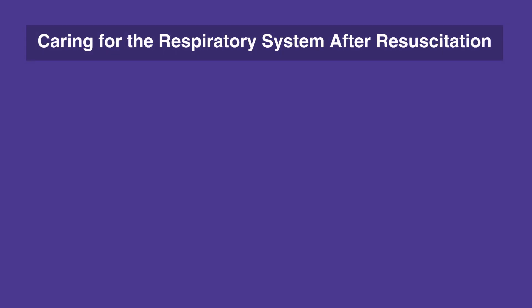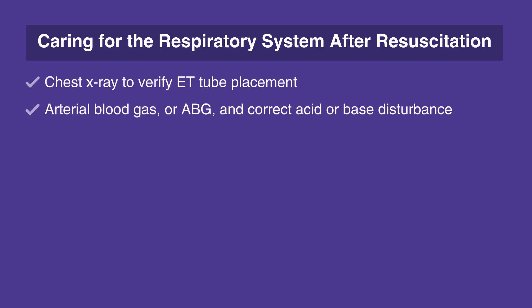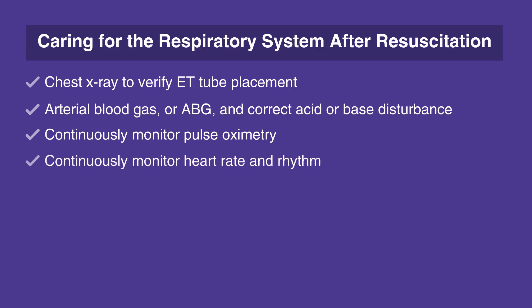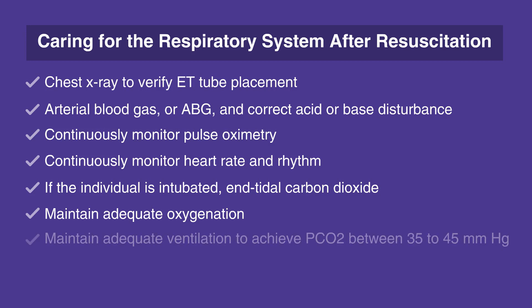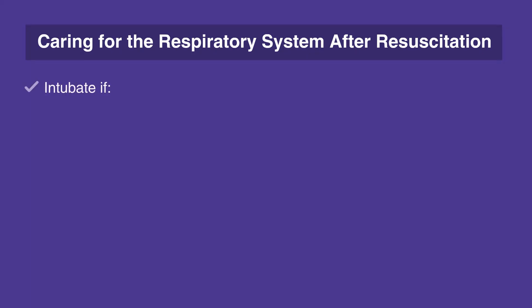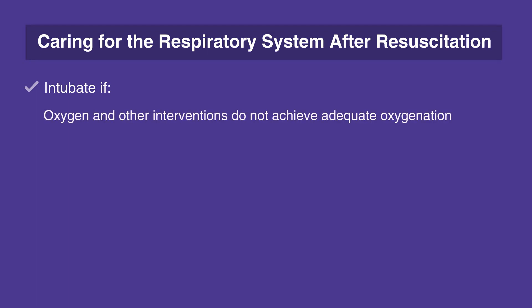When caring for the respiratory system after resuscitation, follow this checklist. Chest x-ray to verify ET tube placement. Arterial blood gas, or ABG, and correct acid-base disturbance. Continuously monitor pulse oximetry. Continuously monitor heart rate and rhythm. If the individual is intubated, monitor end-tidal carbon dioxide. Maintain adequate oxygenation — saturation between 94 and 99%. Maintain adequate ventilation to achieve PCO2 between 35 to 45 millimeters of mercury, unless otherwise indicated. Intubate if oxygen and other interventions do not achieve adequate oxygenation.